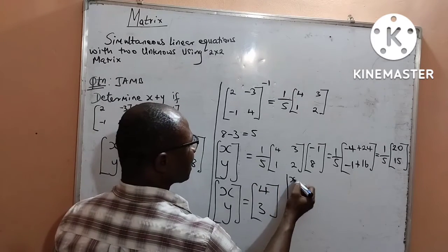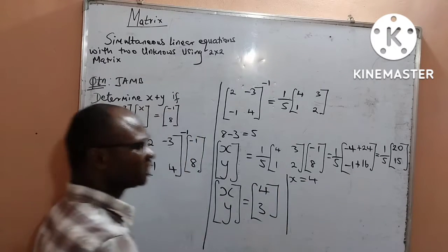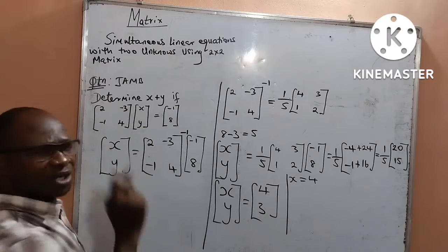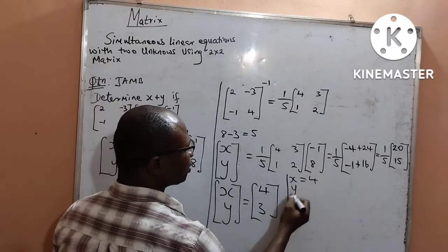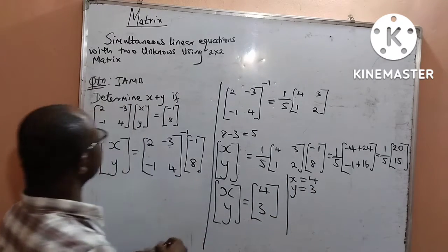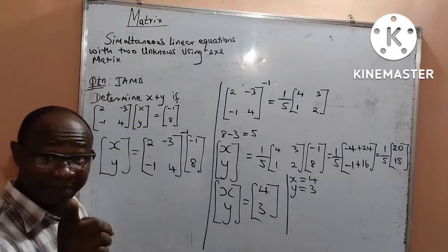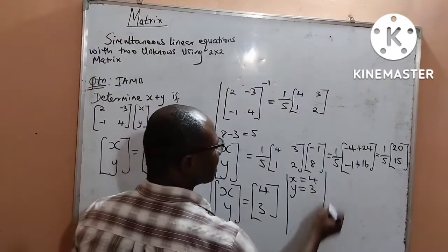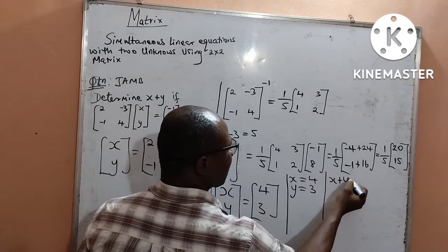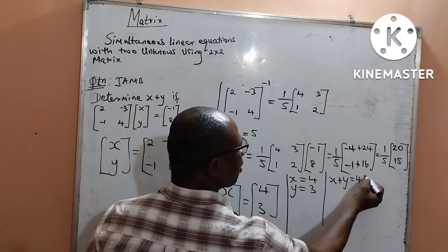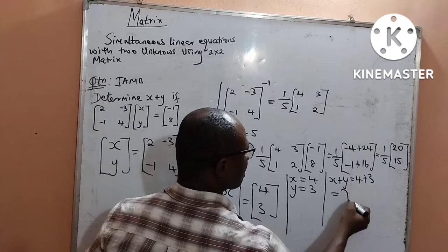Therefore, x is equal to 4, the first unknown in the question, and y is equal to 3. But the question said, determine x plus y. That is what I am asked. I can now say, therefore, x plus y is equal to 4 plus 3, which is equal to 7. Final answer.